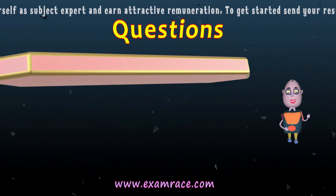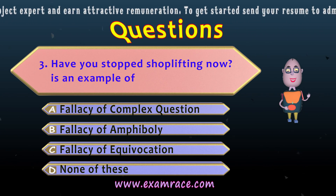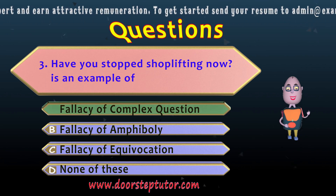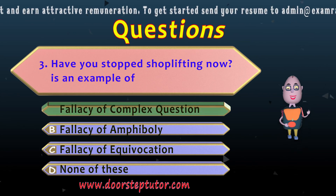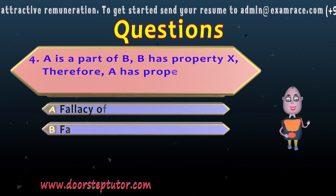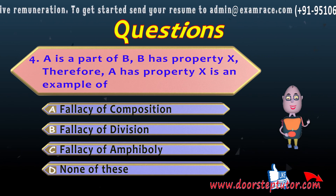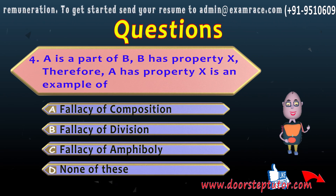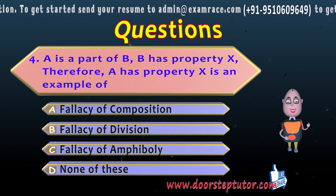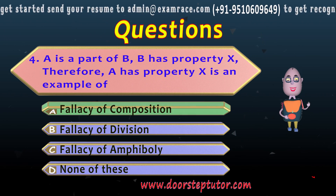Question 4: A is a part of B; B has property X; therefore A has property X. This commits the fallacy of — the correct answer is Fallacy of Composition.